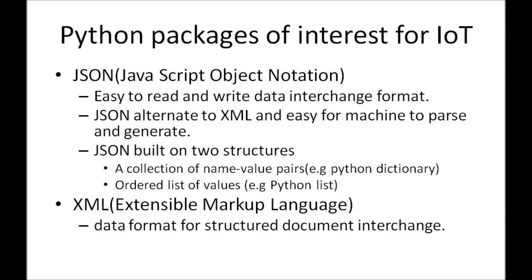This slide explains some important insights about JSON and XML and the next slide we will see about the remaining two packages. So the JSON stands for JavaScript Object Notation and it is the easiest way of read and write data interchange format and it is an alternative to XML and it is very easy for machine to parse and generate. So that is why JSON is replacing at few places instead of XML. JSON is built basically on two structures, the name value pair type and the ordered list. So example can be name value pair, it can be your Python dictionary and ordered list of values can be your Python data structure list.